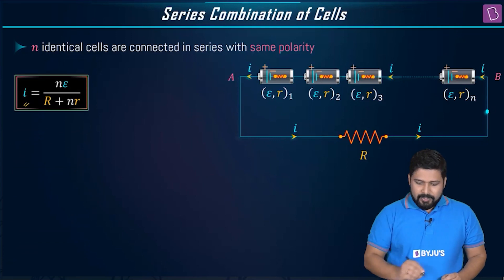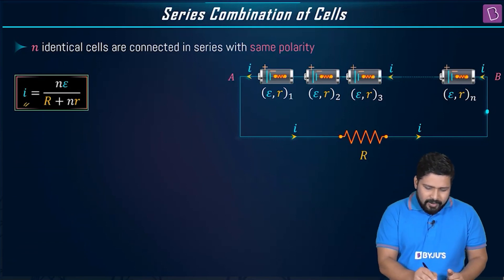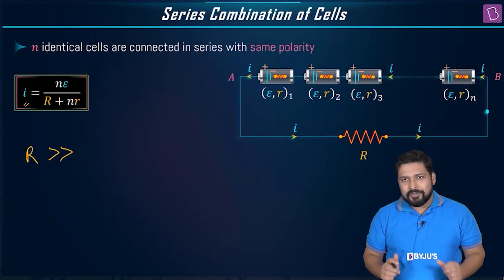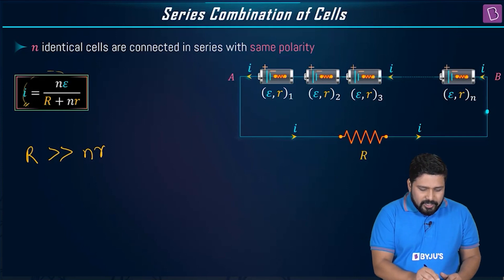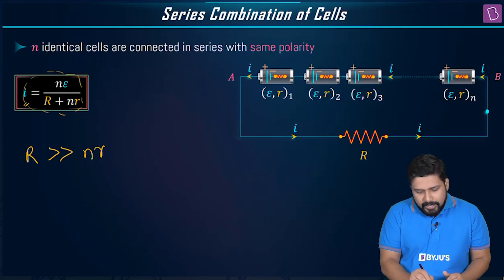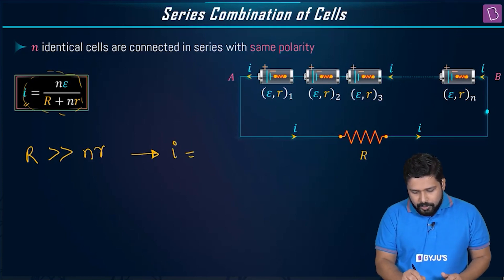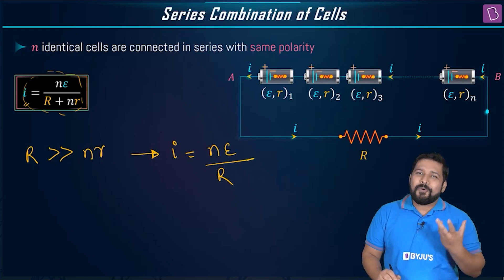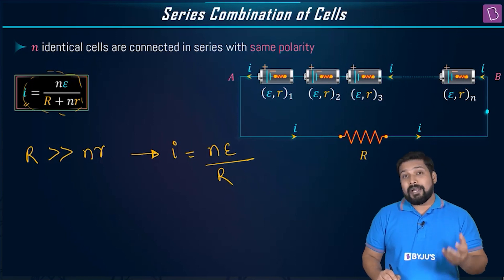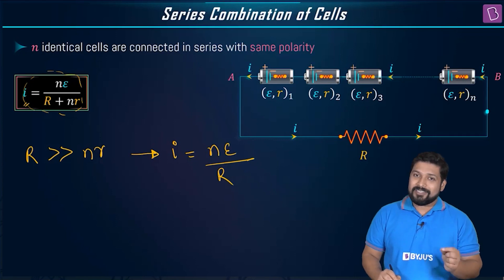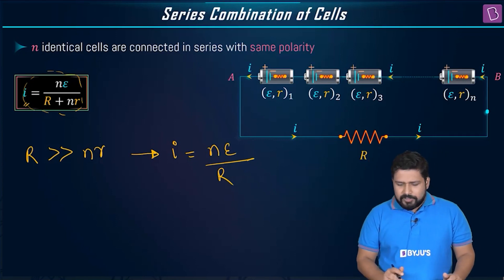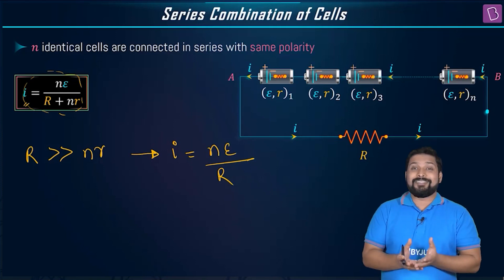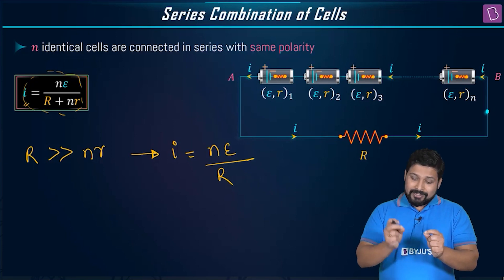Now we apply a limiting condition: if the external resistance R is much much greater than the total internal resistance nr, then nr can be neglected in the denominator. The current then becomes I = nE / R, and the combination behaves like an ideal cell with no internal resistance.